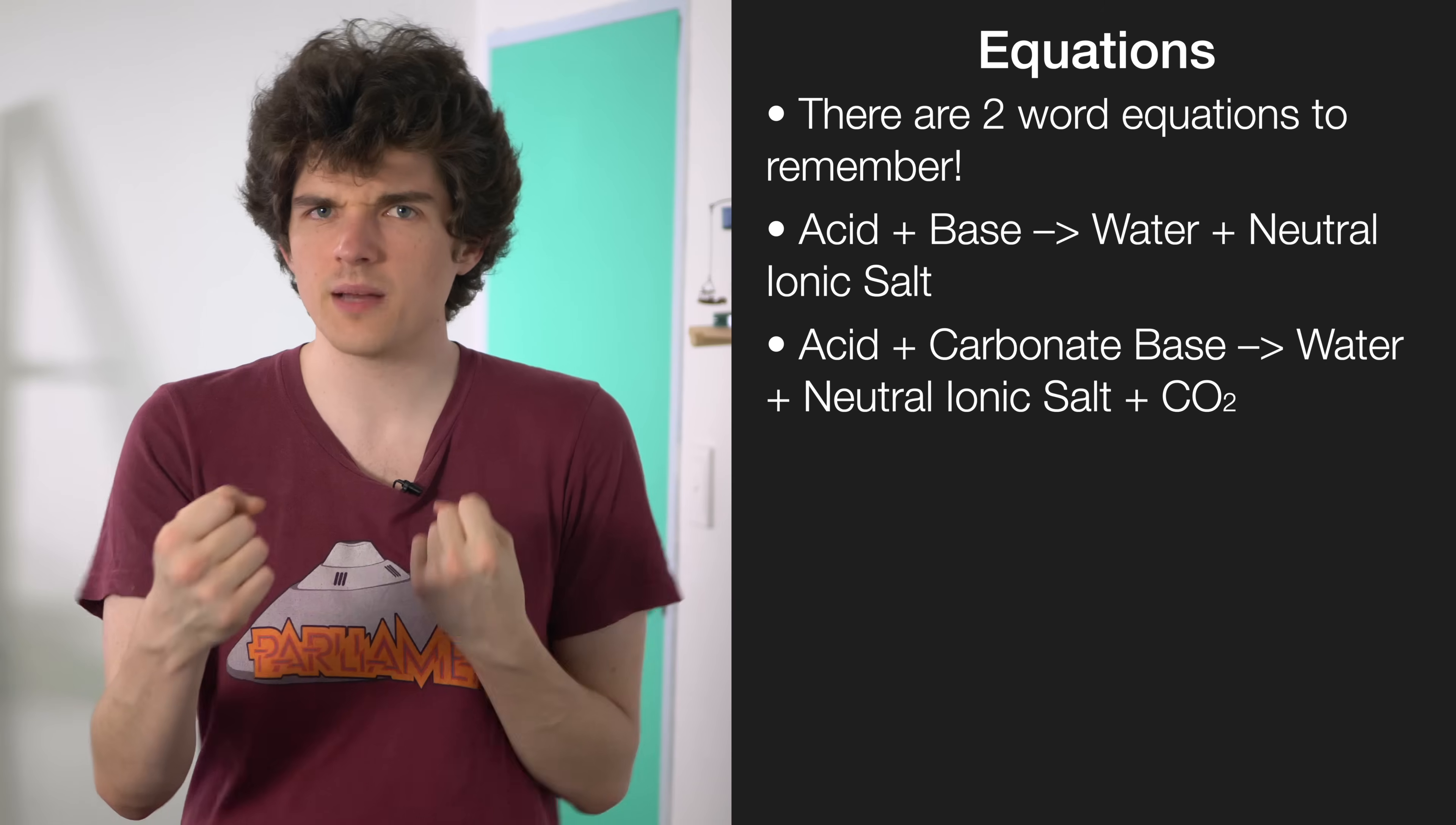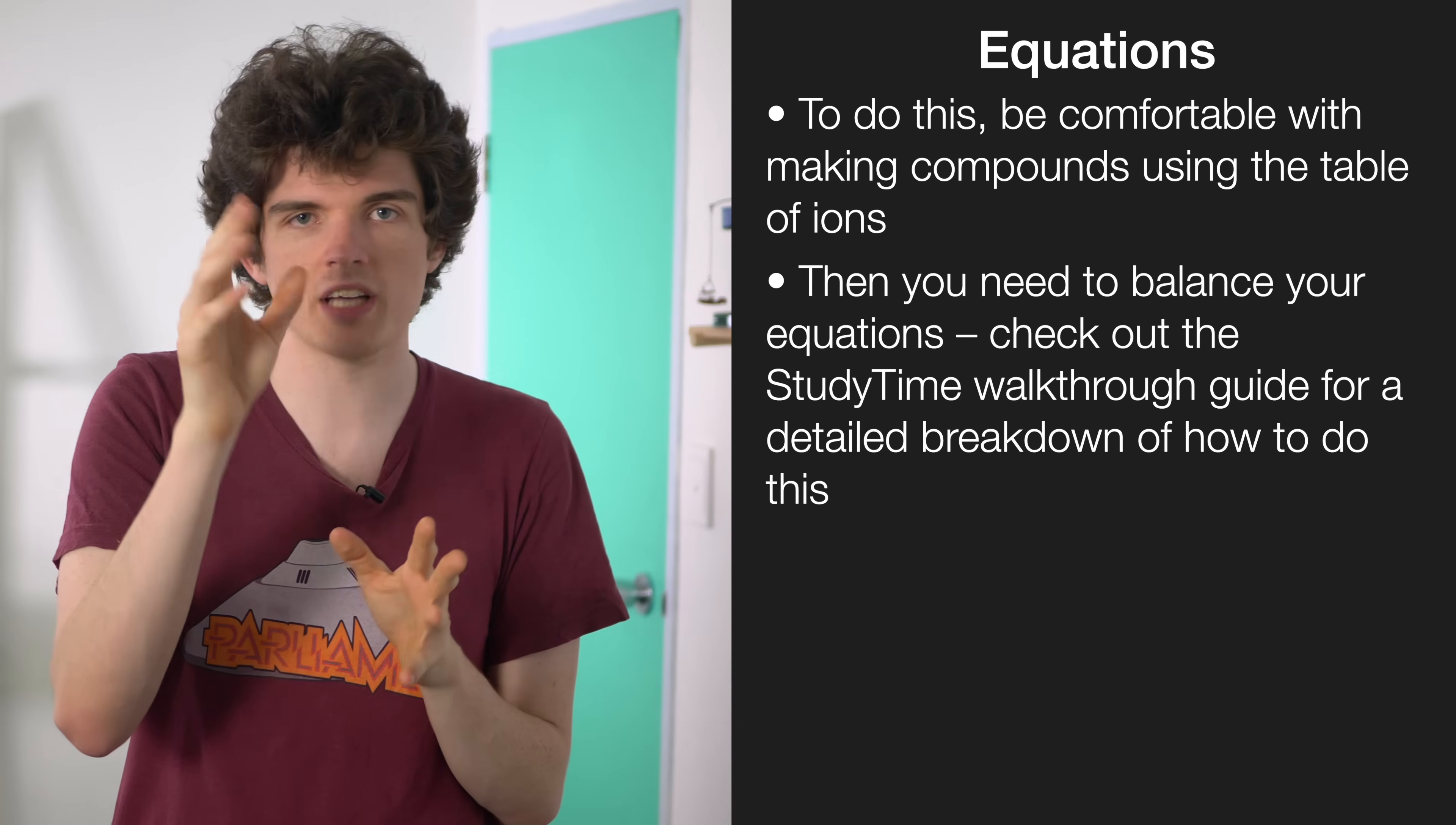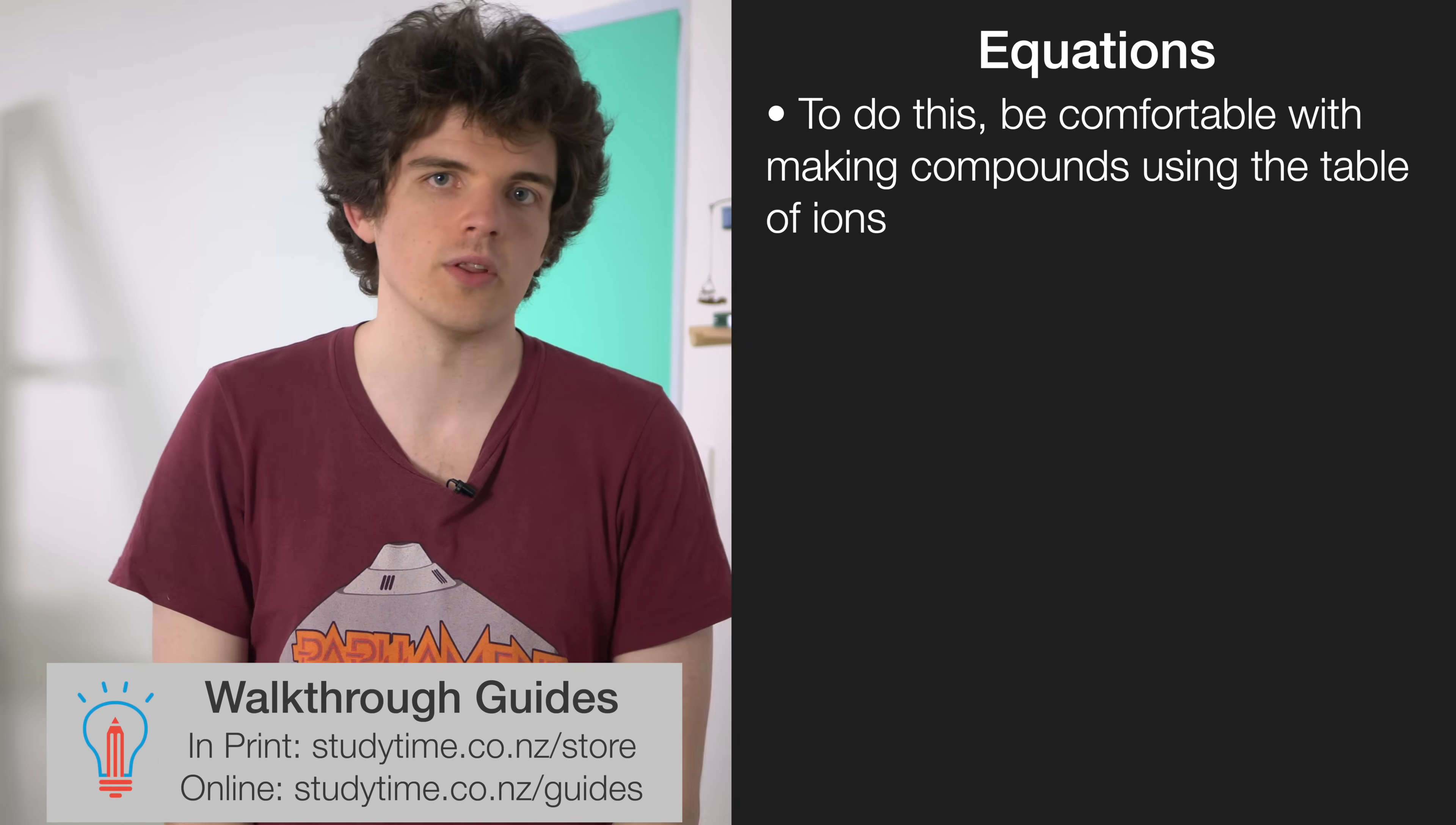Once you've got your word equation, it's time to turn it into a symbol equation. So you're going to have to convert words like magnesium hydroxide into their relevant chemical symbols, for example Mg(OH)2 for magnesium hydroxide. To do this you need to go to your table of ions and get really comfortable with making compounds out of those ions. Once you've got your symbol equation all written out, it's time to balance it. This is quite an in-depth process, so definitely go check out our study time guide for an in-depth walkthrough on this.